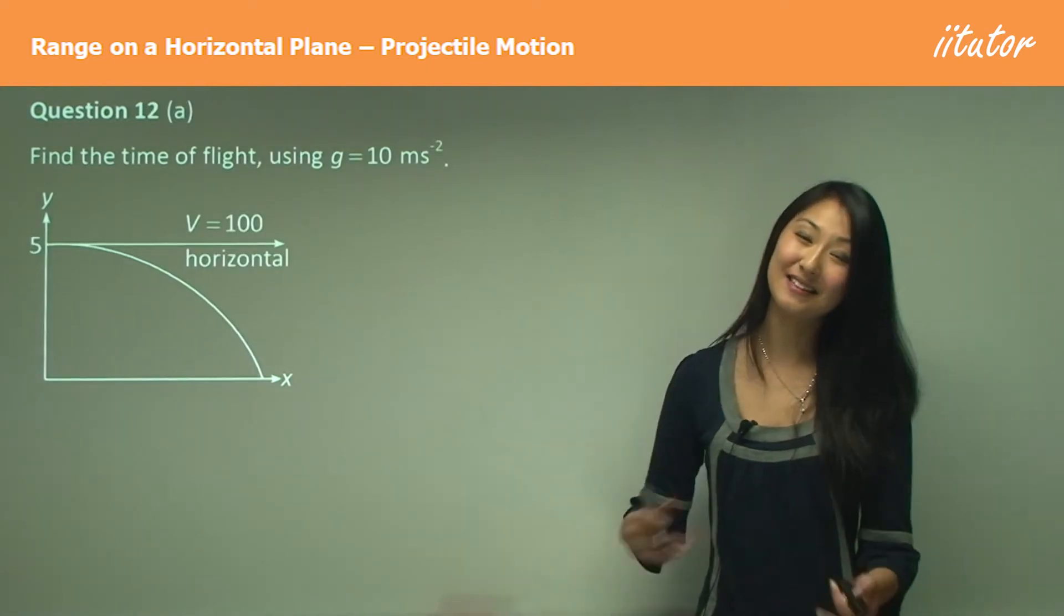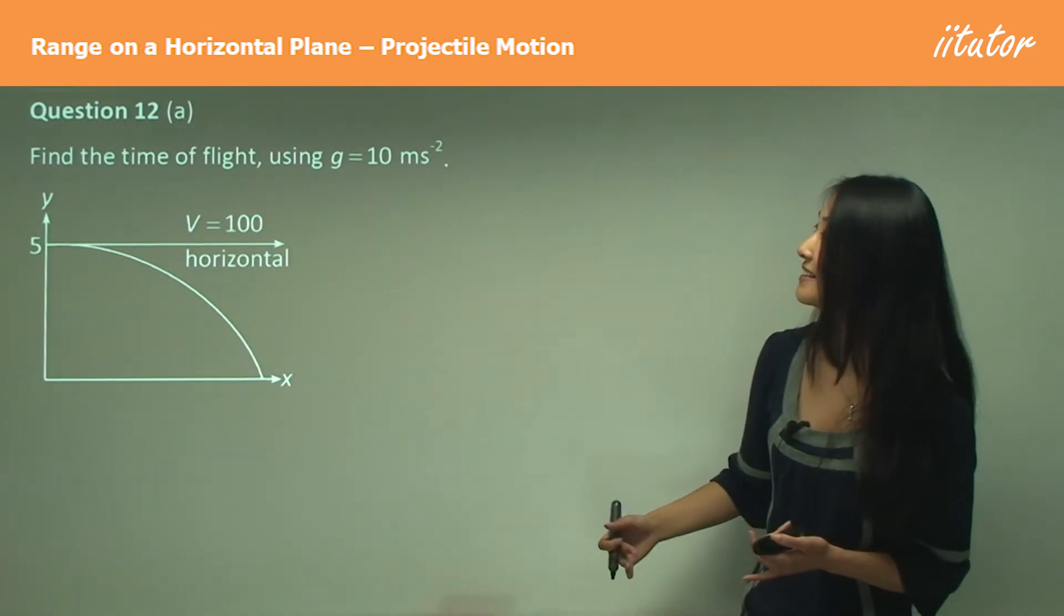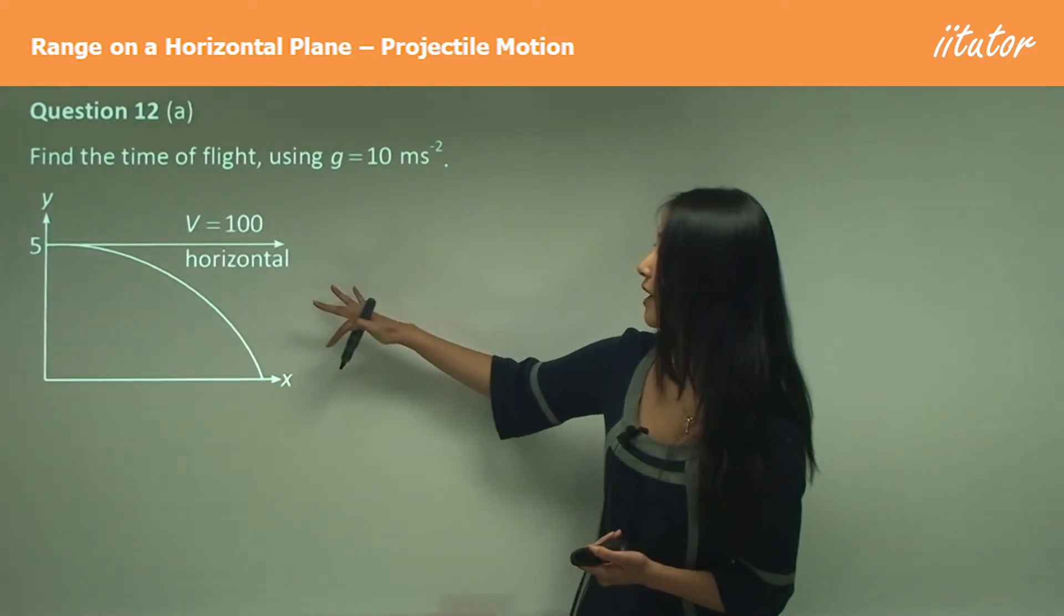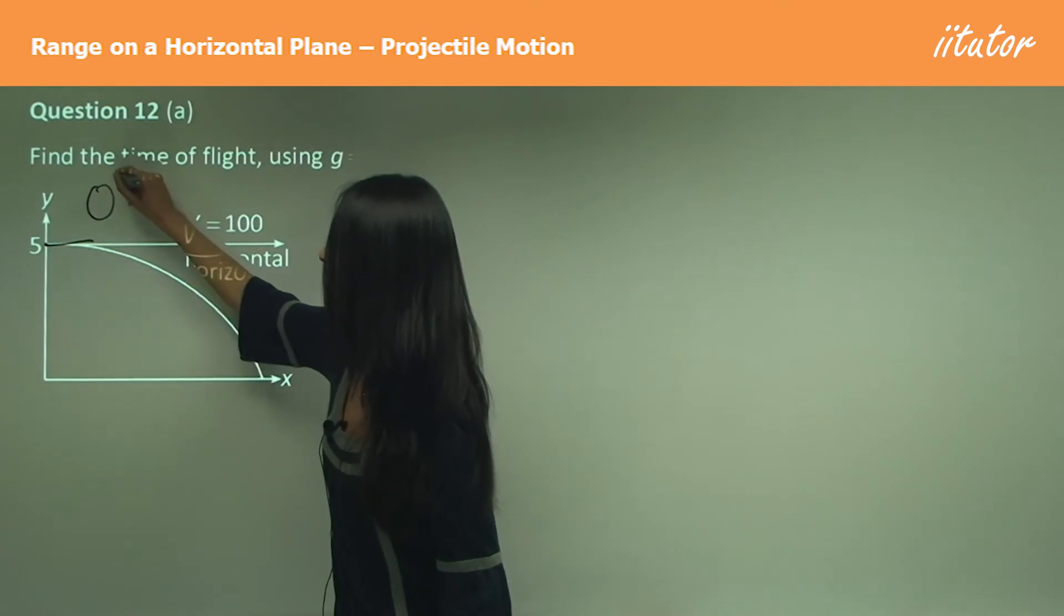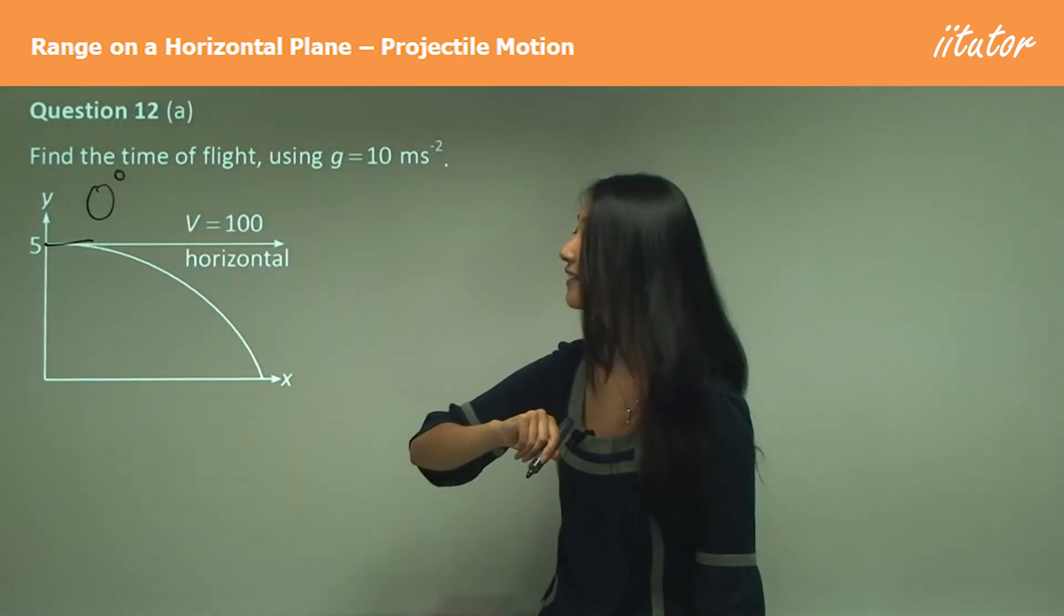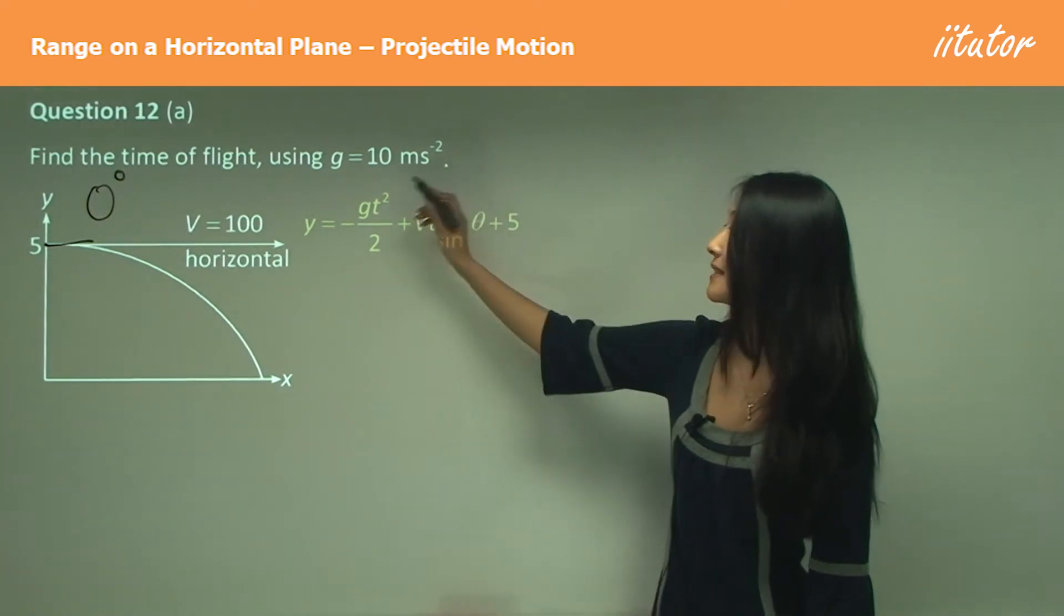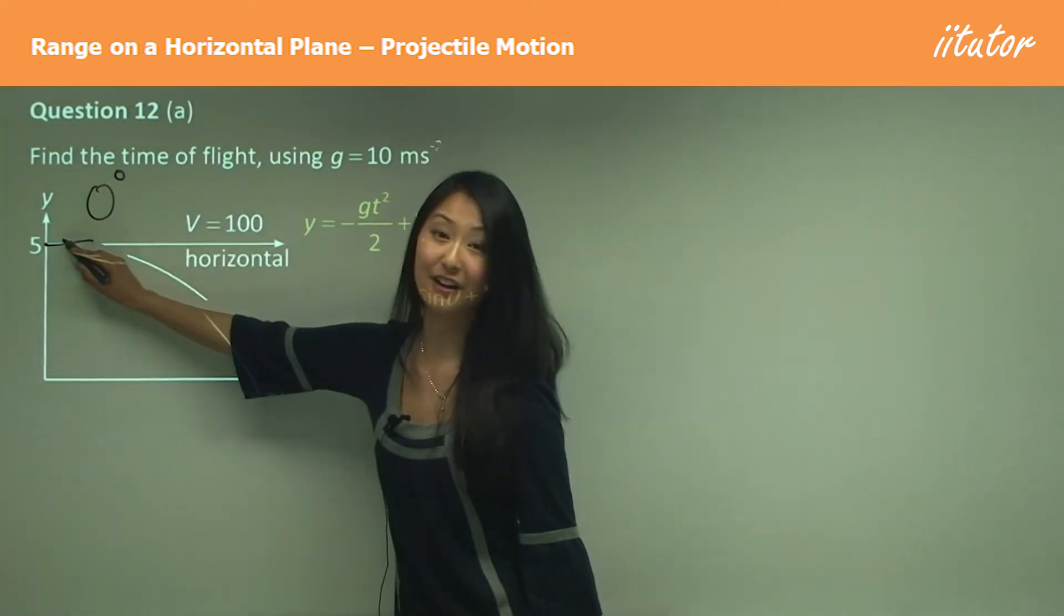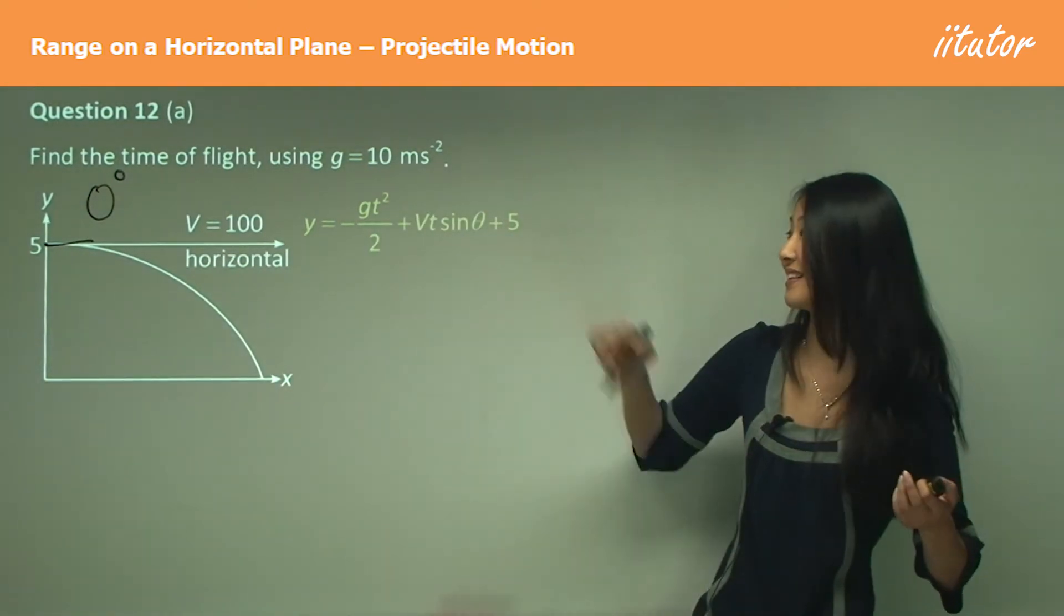So let's have a look at question 12 here. This is more like an exam style question where we work something out and we work from there. First of all, we want to find out the time of flight of this diagram using gravity is 10. So here, remember how because we're just throwing it horizontally, that angle there is actually just zero degrees. Now our vertical displacement in this case is given to us by this plus five because it's starting off a five there. Can you see that? So that's why we've just added five, but in an exam situation you would have done the whole working out to work that out.